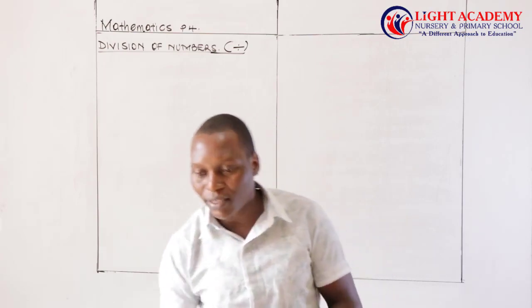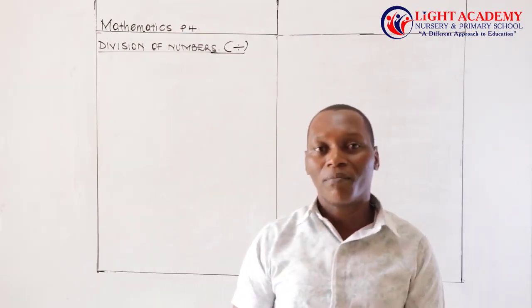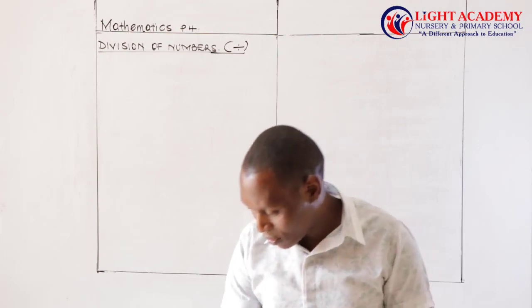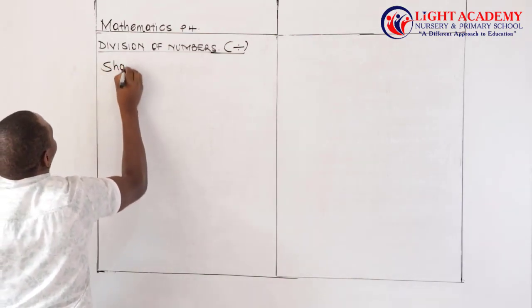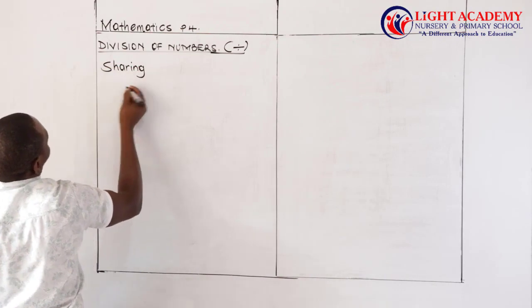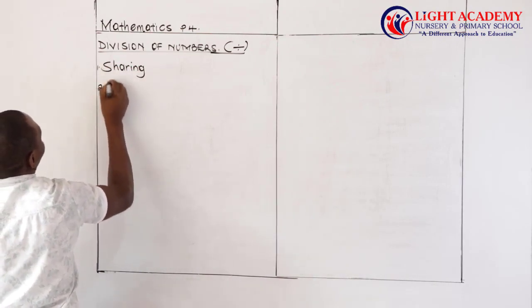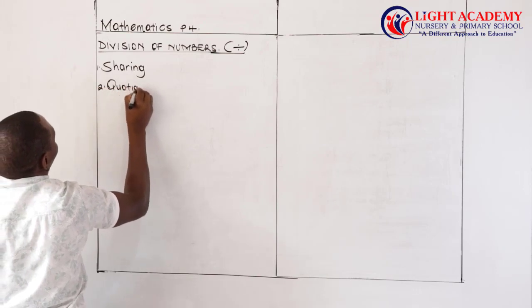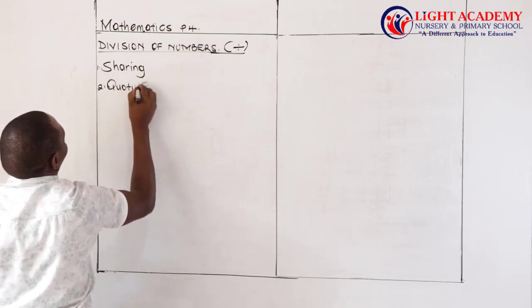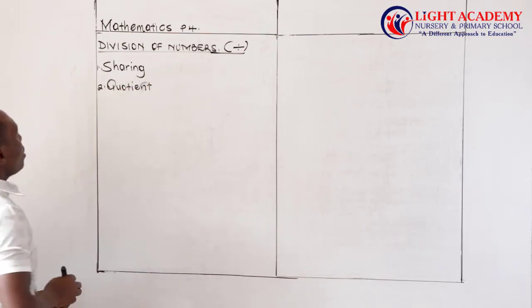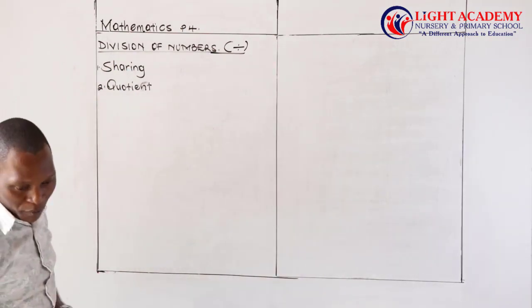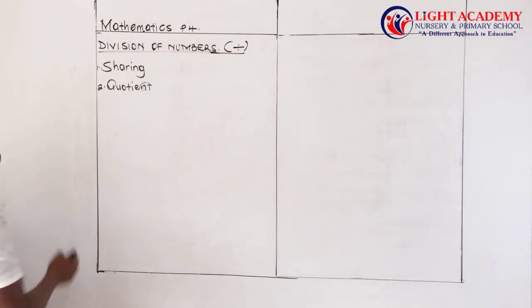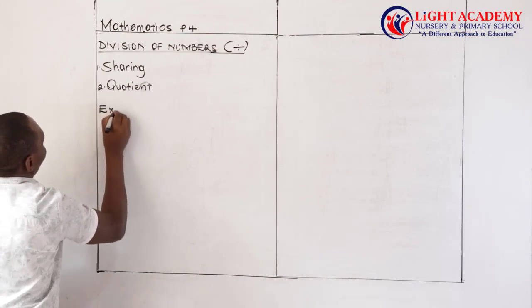At a later stage, we shall be able also to say that we can use the word quotient. So when we use these two words here, sharing is common, then quotient we shall use at a later stage. They have the same meaning as dividing of numbers. So from primary 2 and primary 3, we can refer to these examples here.